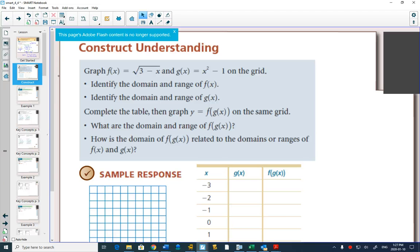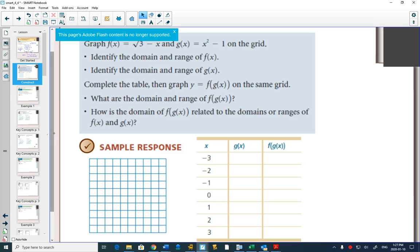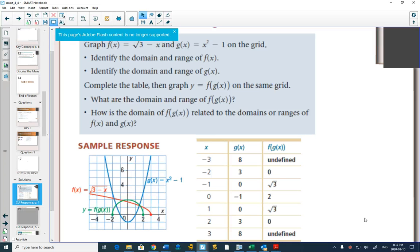So we'll do the construct the understanding together as well. Identify the domain and range of f(x). Identify the domain and range of g(x). Complete the table, then graph the composition on the same function. Check your work with plugging in your values. Hopefully your understanding of composition was good there. Yes, it is odd that a couple of them are undefined. When we look at the graphs in the end, now all we would have for the green graph is we know this is 0 and 0. At negative 1 and 1, we have √3. And at 0, we have 2.